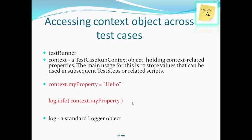Of the three variables: testRunner has been discussed in detail previously. The context is a test case run context object which holds context-related properties; its main use is storing values that can be used in subsequent test steps — for example, creating a property named myProperty with the value 'hello'. The log object is a standard logger object. These three variables — testRunner, context, and log — are used in the script test step.